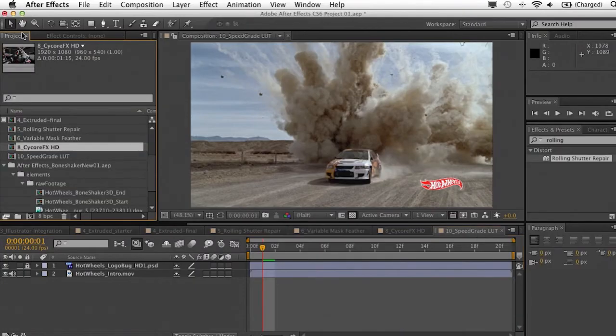And lastly, continuing on with some integration with other new features inside of CS6, speed-grade LUTs. Now in the previous version of After Effects, we introduced the ability to look up tables and actually bring LUTs directly into After Effects and apply them to your footage. Well, now that Adobe Speedgrade is part of Production Premium, you can bring in .look files directly into After Effects as well.